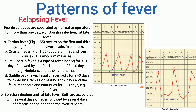Tertian fever occurs on the 1st and 3rd day, for example Plasmodium vivax, ovale, and falciparum. Quartan fever occurs on the 1st and 4th day, for example Plasmodium malariae. Pel-Ebstein fever is a type of fever lasting for 3–10 days followed by an afebrile period of 3–10 days, for example Hodgkin's and other lymphomas.